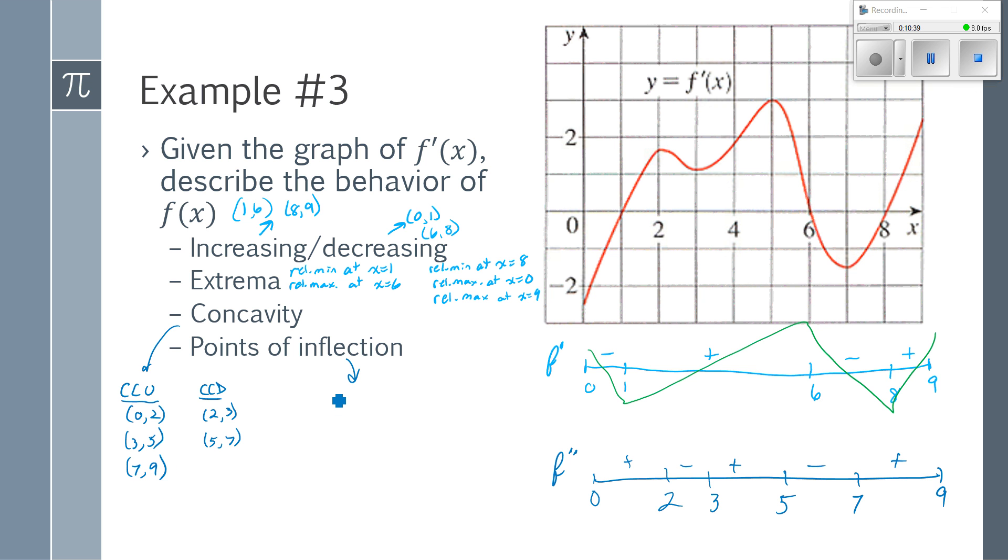And then my points of inflection are at where my concavity changes. So at x equals 2, x equals 3, x equals 5, and x equals 7.